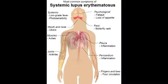What lab or diagnostic finding is observed with SLE? In SLE, you see anti-nuclear antibodies. The subtypes of anti-nuclear antibodies include anti-Smith antibodies and anti-double-stranded DNA antibodies.